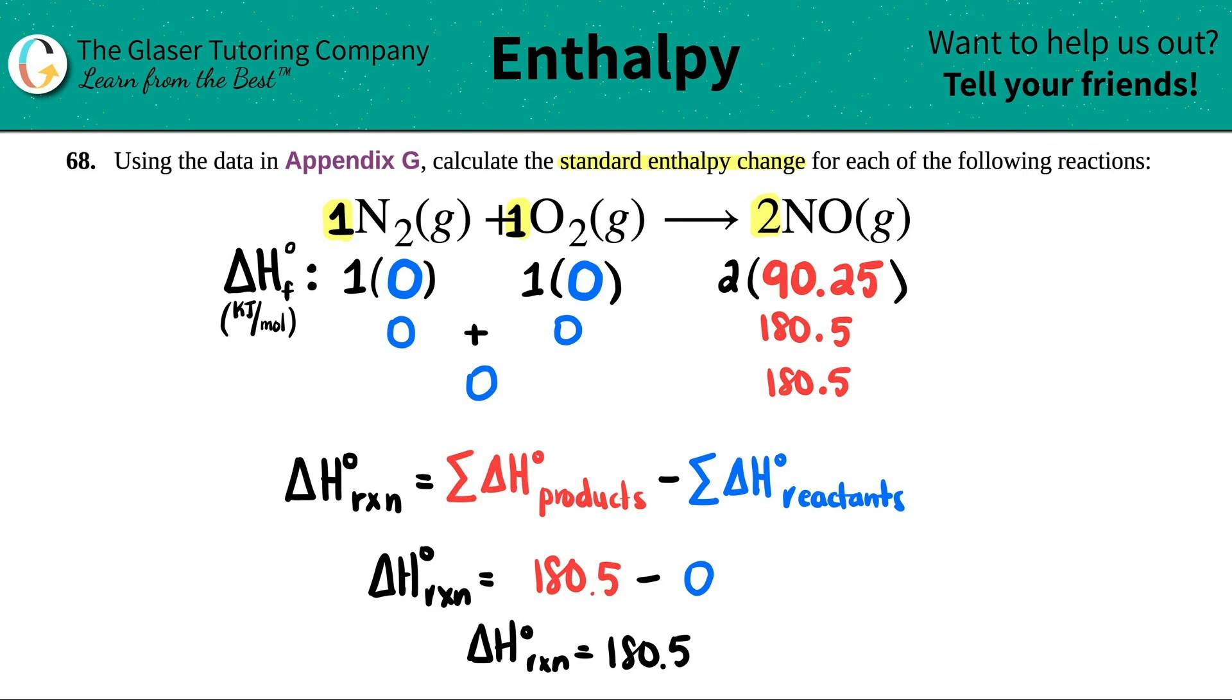Now just know that the units for delta H, if we're using the appendix, is always kilojoules per mole. So this would be 180.5 kilojoules per mole. And you are done.